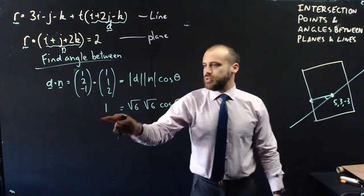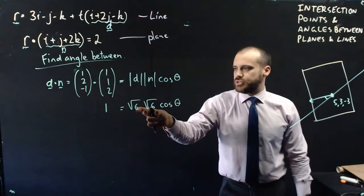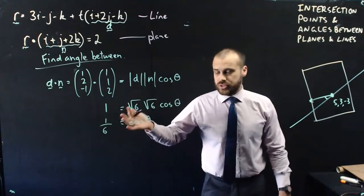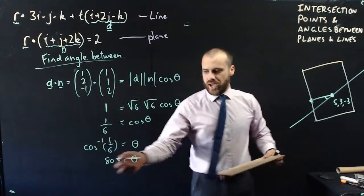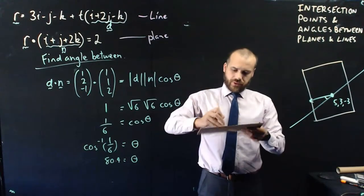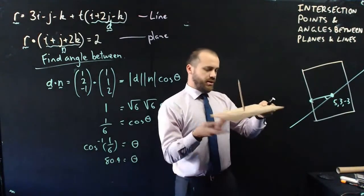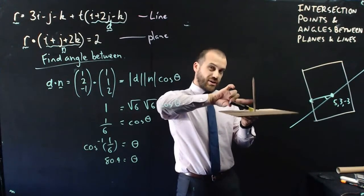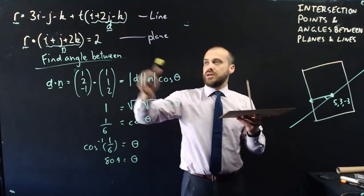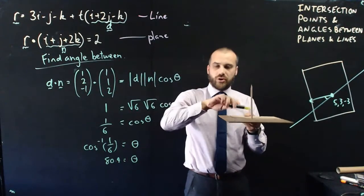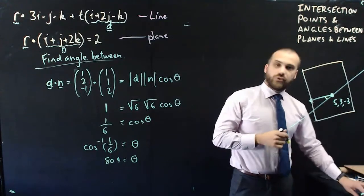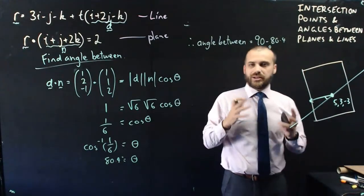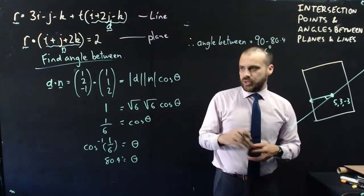The dot product of those vectors is 1, the magnitude of the direction vector is √6, the magnitude of the normal is also √6, giving 1 = √6 · √6 · cos θ. Dividing both sides by 6 and taking the inverse cosine gives θ = 80.4°. That's the angle between the line and the normal. Since the normal is perpendicular to the plane, the angle between the line and the plane is the complement: 90° − 80.4° = 9.6°. So we found the intersection point using a simultaneous equation, and the angle by finding the normal and taking the complement.